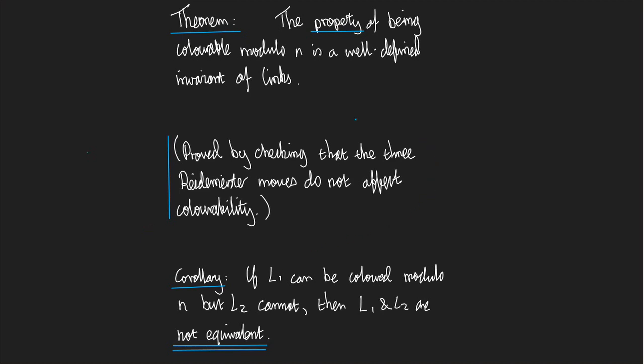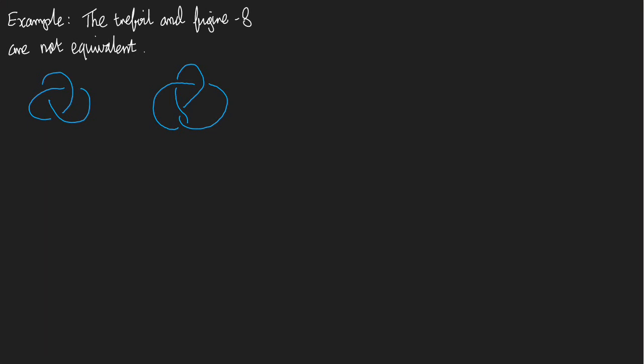But what I want to show you is how to apply it. And let's apply it in an example we ought to have been desperate to prove for the last two weeks, which is that the trefoil and the figure eight are not equivalent. These are our two simplest knots that we've seen. Let's prove that they are genuinely different. How will we do it?